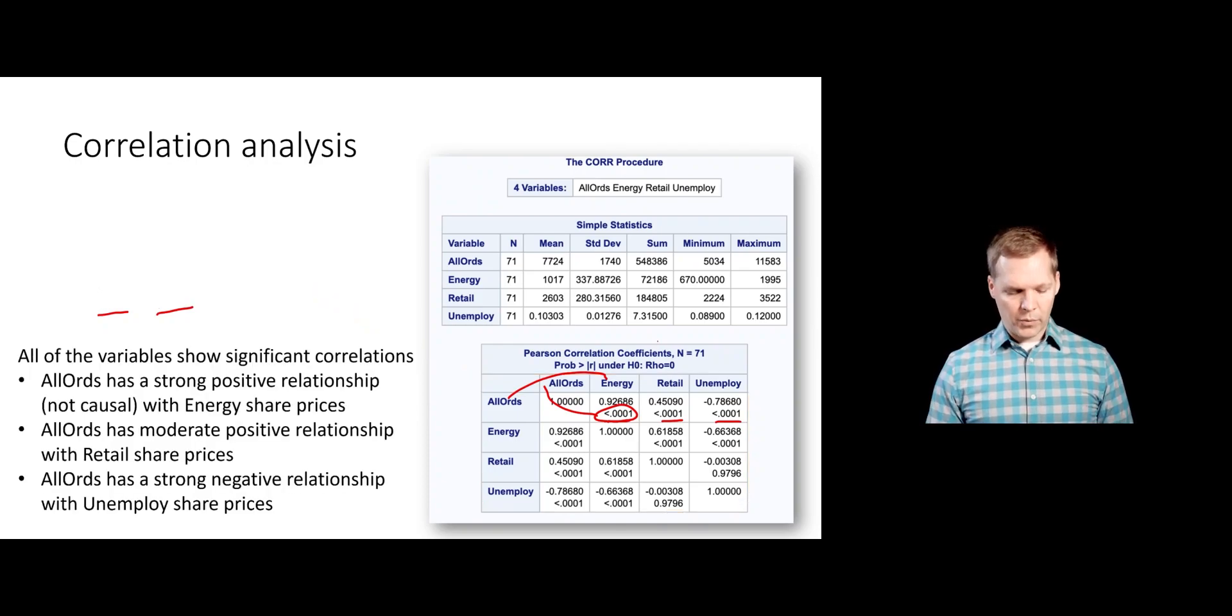You can see that with all ords, there is a significant relationship between energy and retail and also unemployment as well. If we wanted to interpret those values, we obviously have the strongest value of the correlation here between all ords and energy. It's 0.926, so we'd say there's a strong positive relationship with energy prices and all ords. Retail is about 0.45, so that's in the middle range. We might say there's a moderate positive linear relationship. Then all ords and unemployment, this one's actually negative and it's pretty strong, so we would say there's a strong negative linear relationship with unemployment. That all makes sense with what we saw in those scatter plots. The first two had positive trends and the last one had a negative trend. These p-values give us a way to do a formal statistical test.